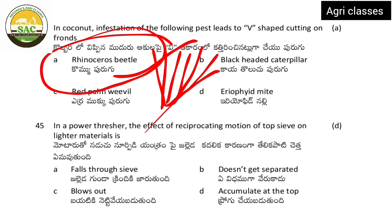In the power thresher, the effect of reciprocating motion of the top sieve acts on lighter material. Material falls through the sieve; what doesn't get separated blows out and accumulates on top. The reciprocating motion of the top sieve causes lighter material to accumulate at the top while heavier grain settles below — this is how separation works in the power thresher.